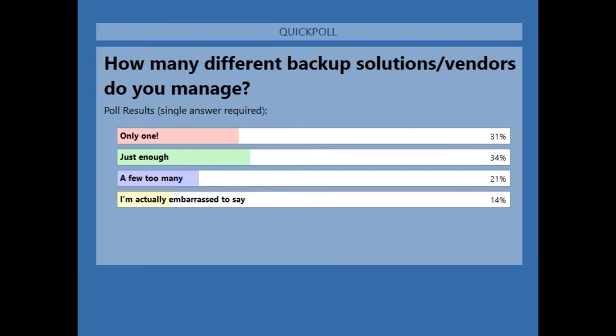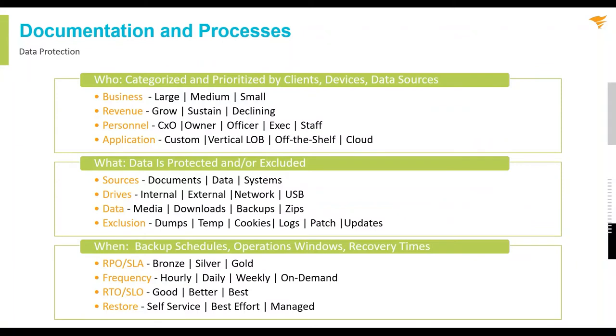While we're being honest: if your patch systems, AV systems, or ticketing systems were in the same state as your backups, you wouldn't let it fly. Backup is that last line of defense, but it's often an afterthought when it comes to proper deployment. So how do we fix that? We start with good documentation and processes around the backup and recovery environment. Start by documenting your current environment and your current customer configurations.